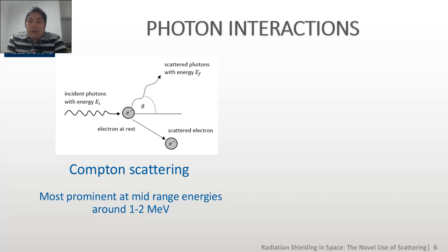Third, we have the Compton scattering, where the incident photons with energy EI strikes an electron at rest and then moves at an angle theta, which is known as a scattering angle, with an energy of EF. Part of the energy is transferred to the electron at rest and the scattered electron now moves at another angle, such that the vector sum of the change in momenta for the system is zero. The energy for the incident photons EI is mostly mid-range between 1 and 2 MeV.